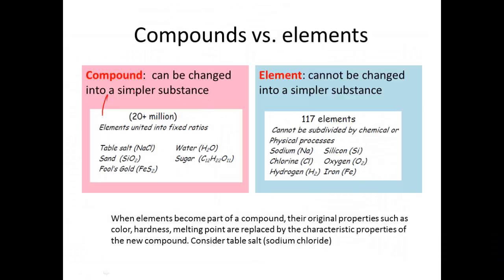Compounds can be changed into simpler substances through a process, which would be a chemical change. And here are some different examples that I'm sure you're familiar with. Table salt. SiO2 is the formula for sand. Fool's gold, pyrite is the name of that. Water, and sugar.